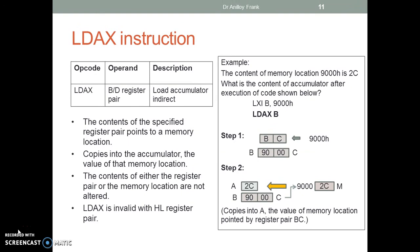LDX: load accumulator indirect. The contents of the specified register pair B or D point to a memory location, and the value of that memory location is copied into the accumulator. The contents of either the register pair or memory location are not altered. LDX is invalid with the HL register pair. Example: the content of memory location 9000 is 2C. Step 1: LXI B,9000 copies the value 9000 to the BC register pair. Step 2: LDX B copies into A the value of the memory location pointed by register B.